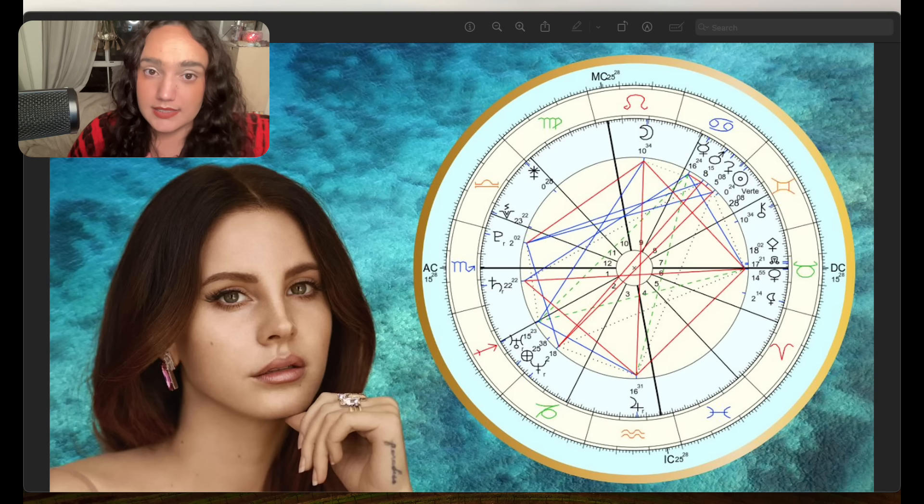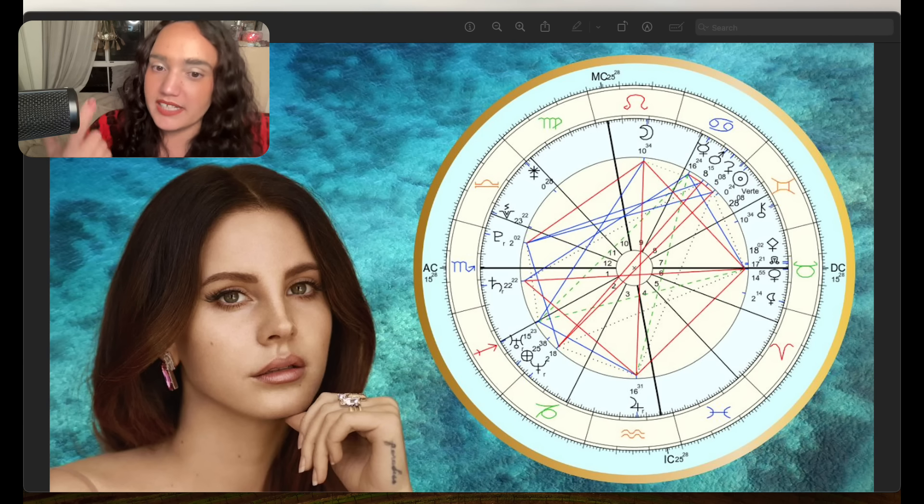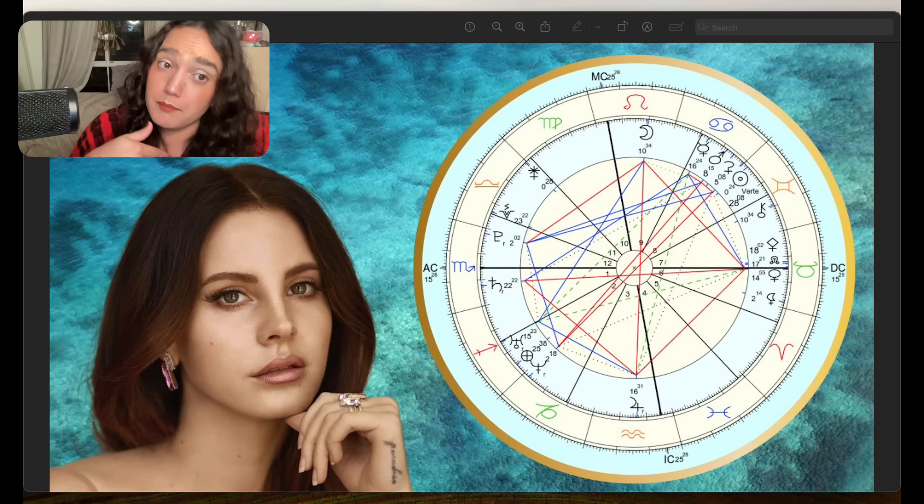I don't perceive her as that mysterious because I think it's because I share quite a few placements with her. I'm a Scorpio rising, I have a Taurus Venus, I have a moon not in Leo but in a public house, so there are some things that I share with her. I understand her so she's not that big a mystery to me but that might help me with this reading.